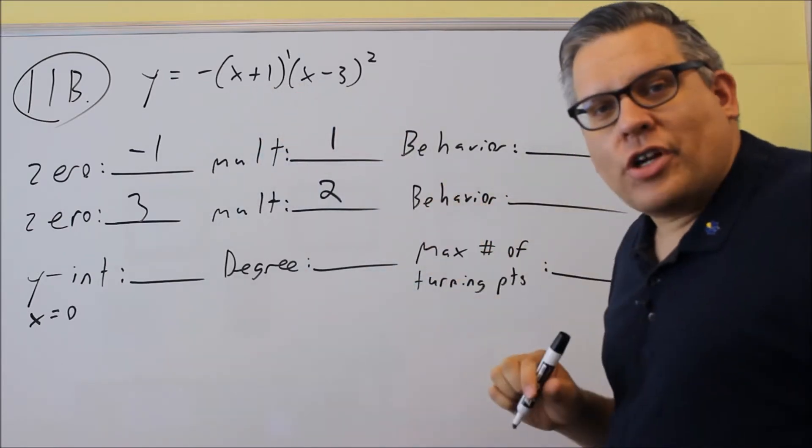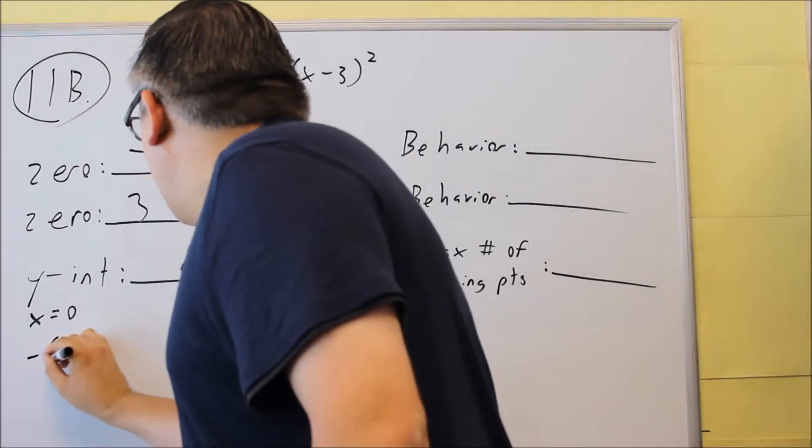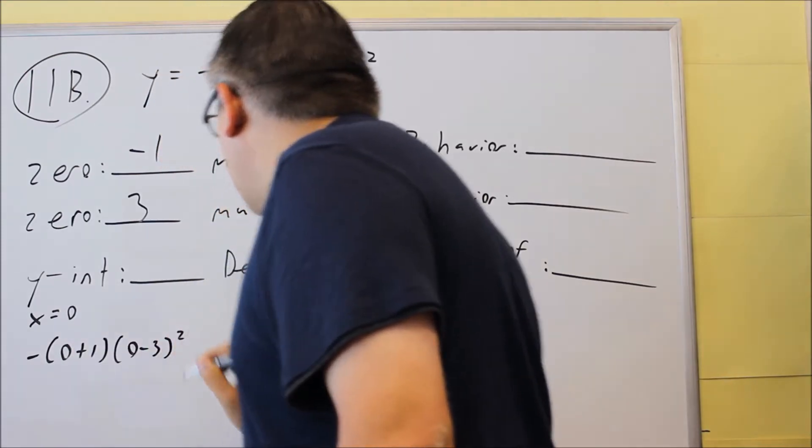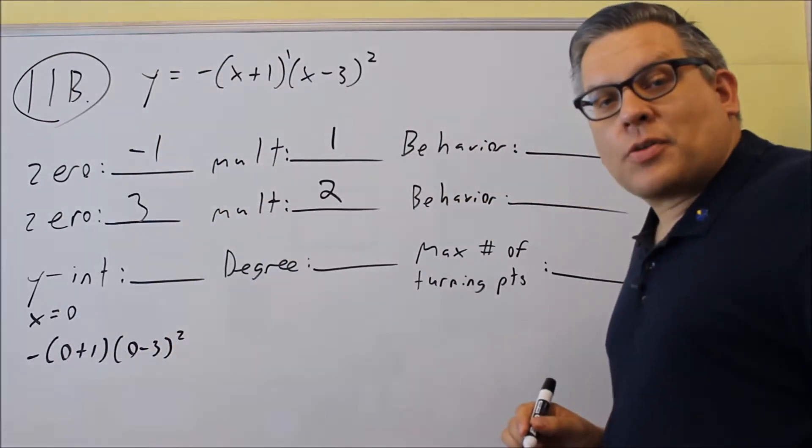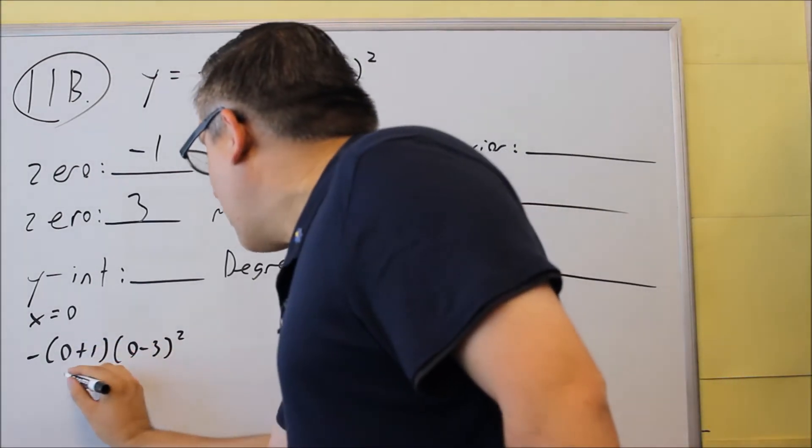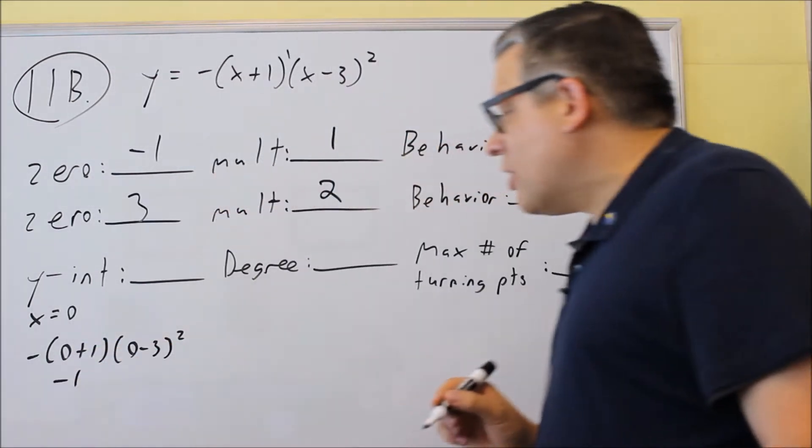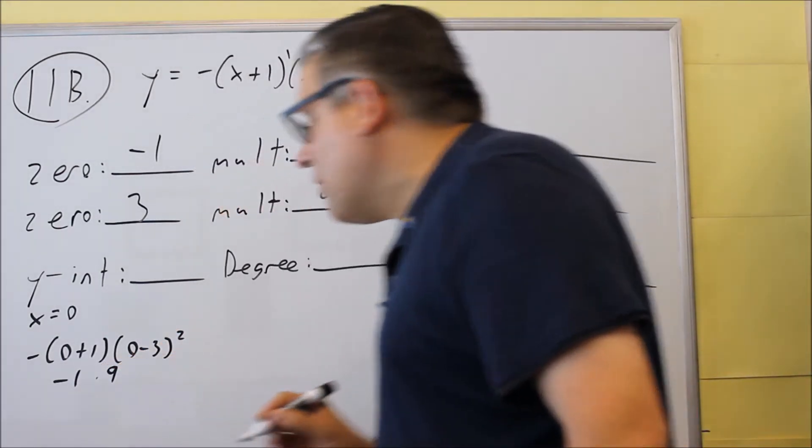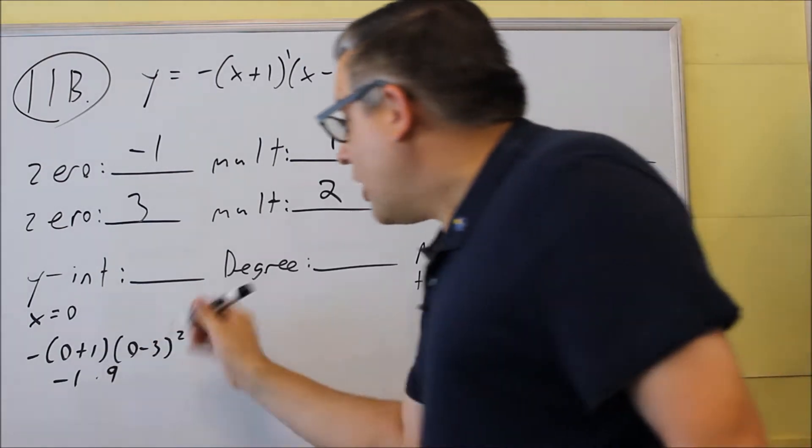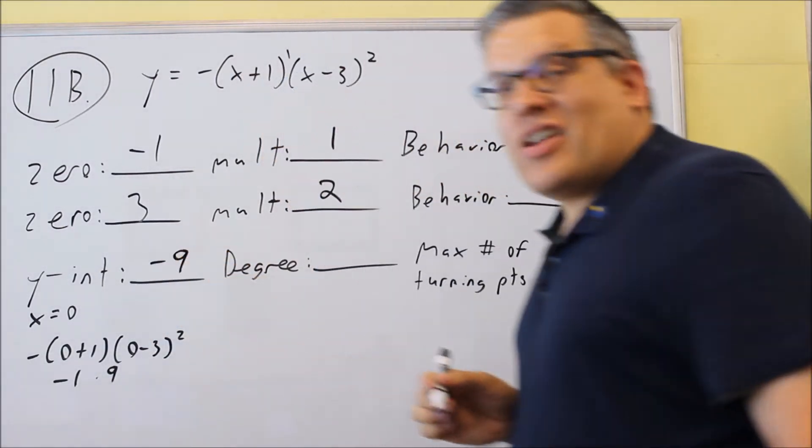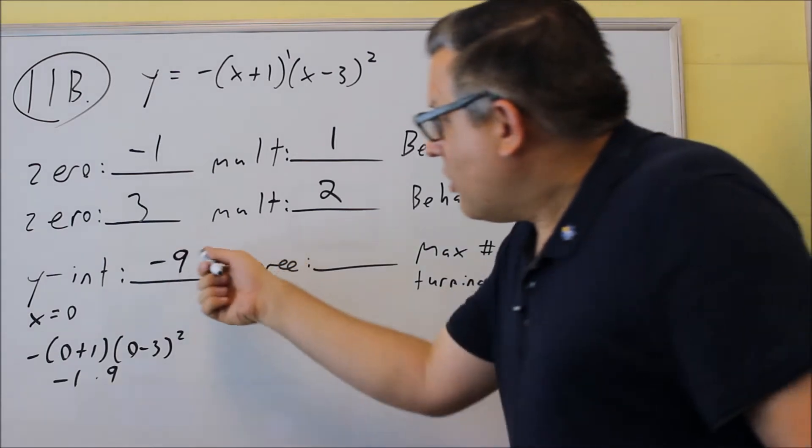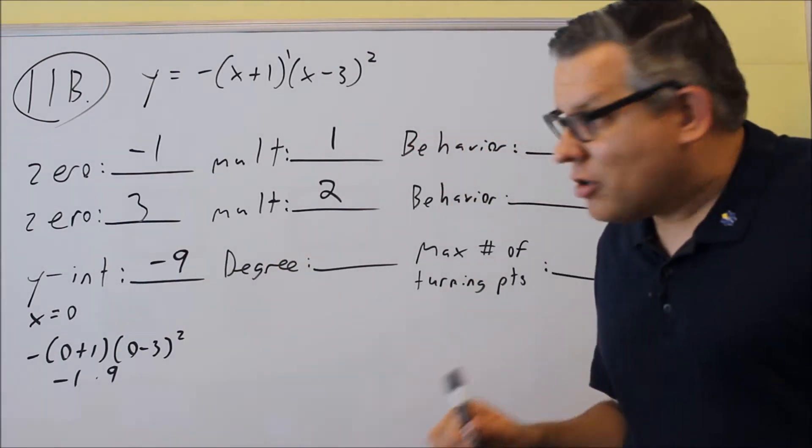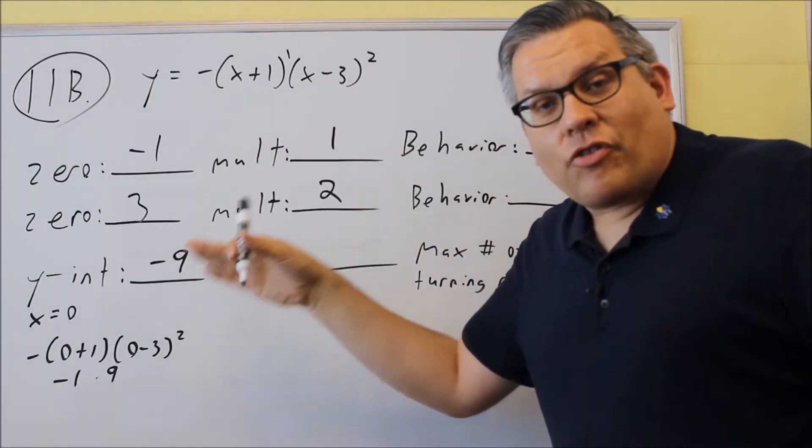We're going to put a zero in for each of the x's. So you're going to get negative zero plus one, zero minus three squared, and then we're going to multiply that together. I'm going to simplify first, and I get negative one inside there. This is negative three, but I'm squaring it, so I actually get nine for the second piece. When I multiply those together, I get negative nine for the y-intercept. So again, don't just assume every time that it's going to be zero. You've got to actually plug a zero in for x and work it out.